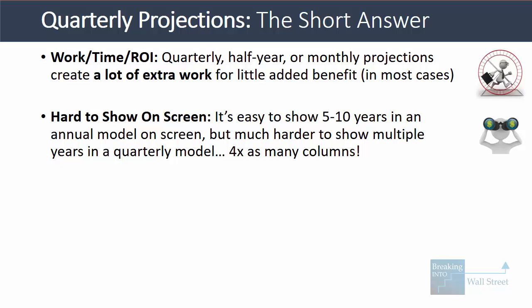Reason number two, on a more practical level, is that it's hard to show quarterly projections on screen, especially if we have a four, five, or six-year model, whereas it's quite easy to show five to ten years in an annual projection model on screen.